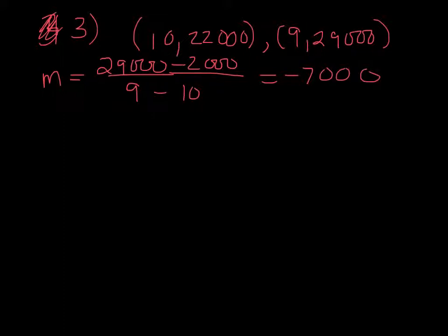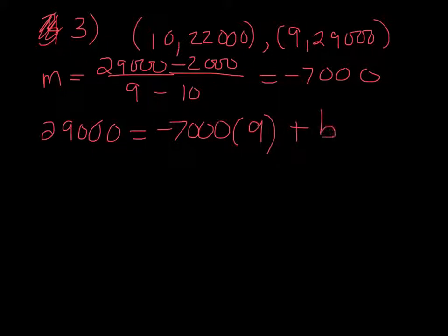So we get -7,000 for our slope. And if we plug in the second point, then I get 29,000 = -7,000(9) + b. And if we solve, we get that b is 92,000.